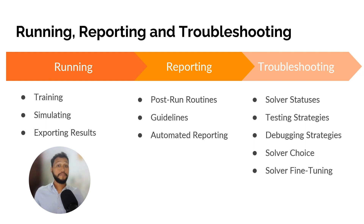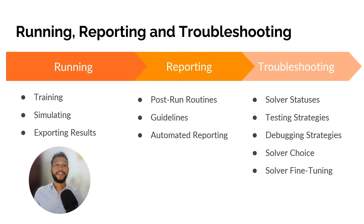Now that we've got our balance sheet model all set and accounted for uncertainty, it is time to unleash the power of SDDP to train and simulate our model. We discuss strategies for fine-tuning training and simulation parameters to strike a balance between computation time and accuracy. We also provide guidelines and code examples for generating a wide range of reports with different levels of granularity. We address the crucial topic of troubleshooting — emphasizing the importance of automated tests to catch potential issues early on — and finally discuss various debugging strategies.